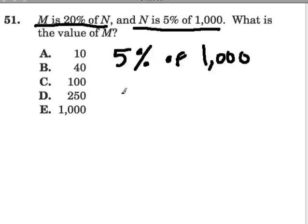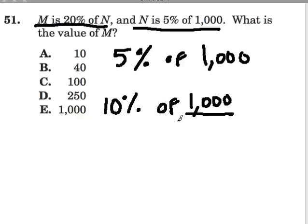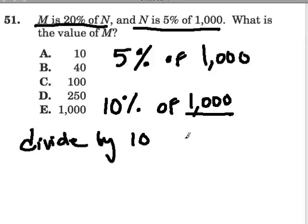With percents, I have an algorithm for it, but I always go for 10%. That's a strategy I like to use, or 1%, and then use that to figure out whatever percent I need. So 10% of 1,000 is really easy, because 1,000 is a multiple of 10, and to find 10%, you just divide by 10. That's all you're doing, because 10% is 10 out of 100.